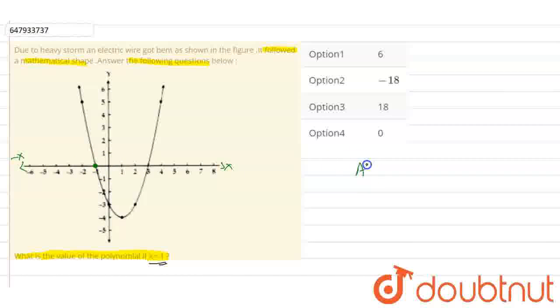So we can say that at x equals minus 1, the value of the polynomial is zero. This is our correct answer: Option number 4. Thank you.